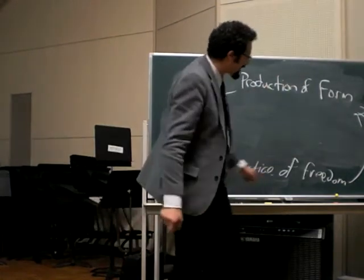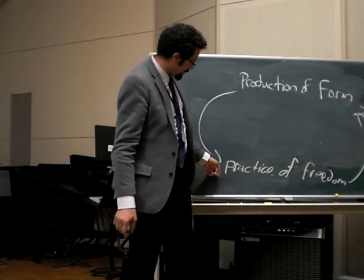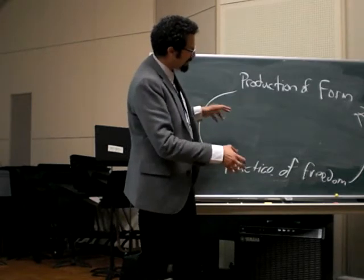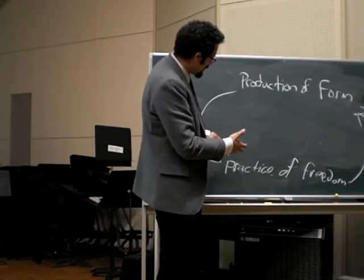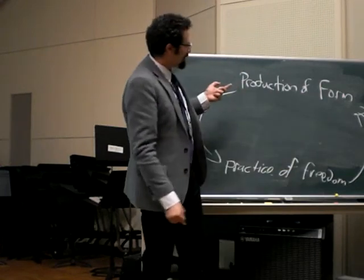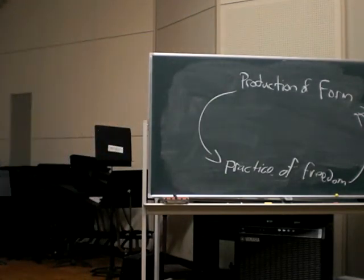That these things are always making each other happen, so to some degree this is where composition would have been and this is where performance or improvisation would have been. But my idea is that actually what we have is a continual circle in which it's ultimately, I think, maybe even more one single thing that's happening, but in what I call a constant sort of feedback.